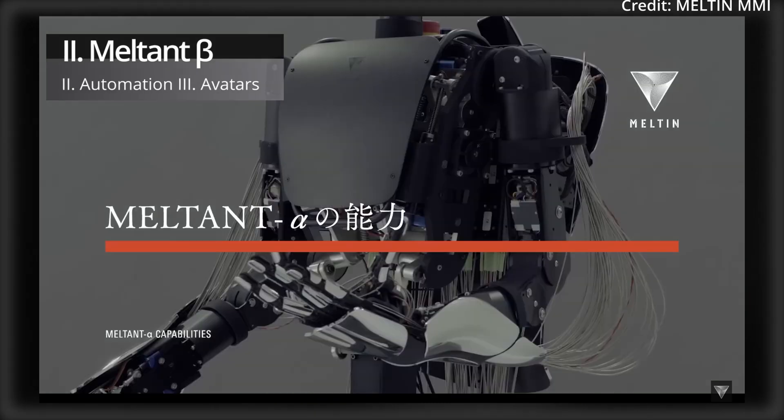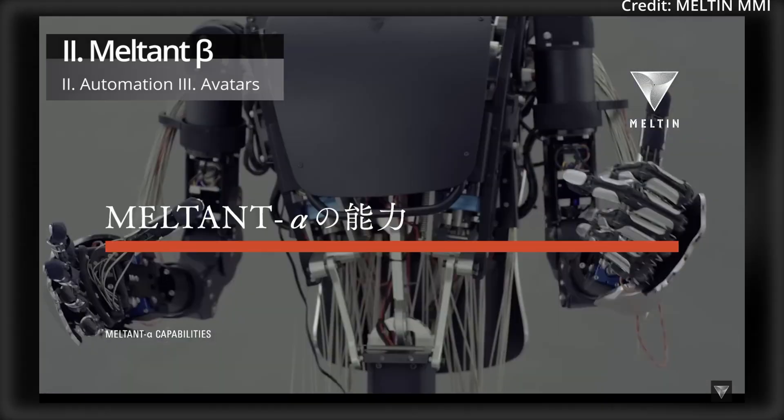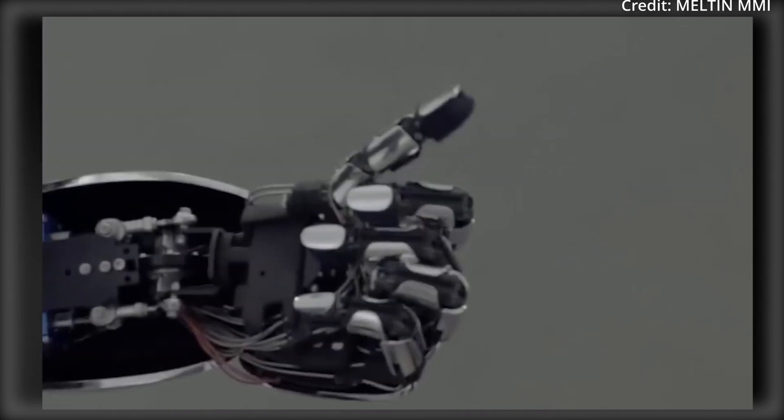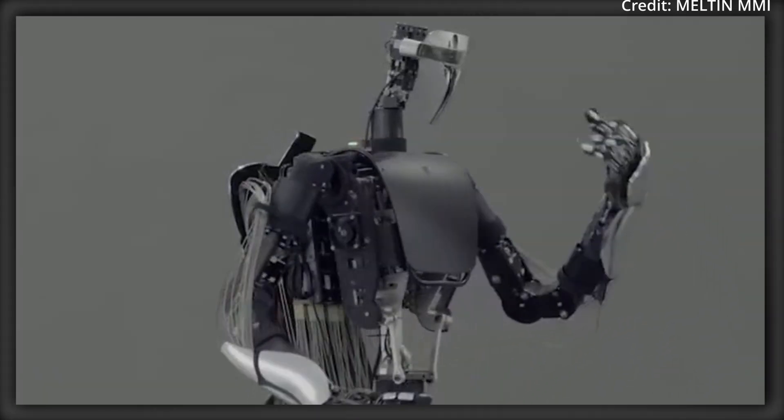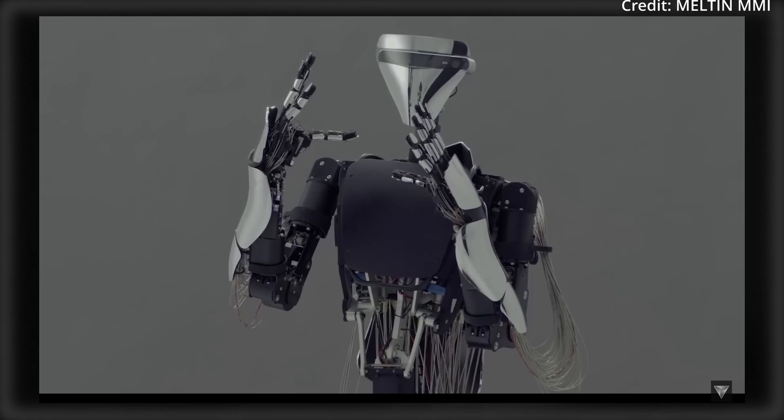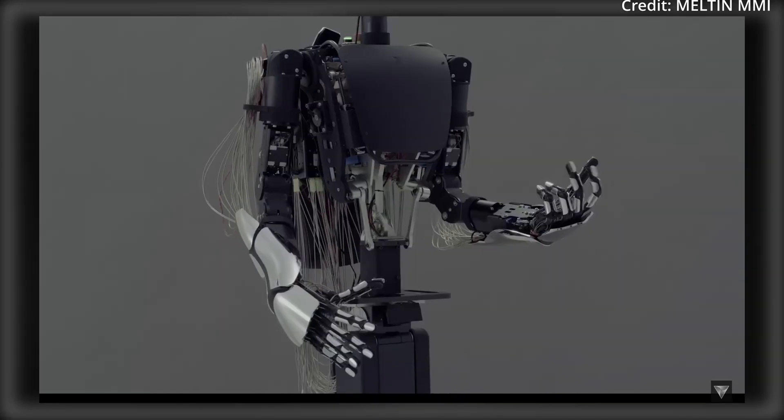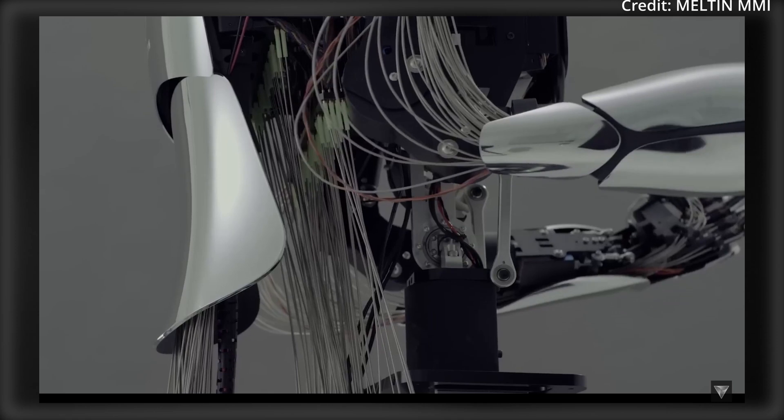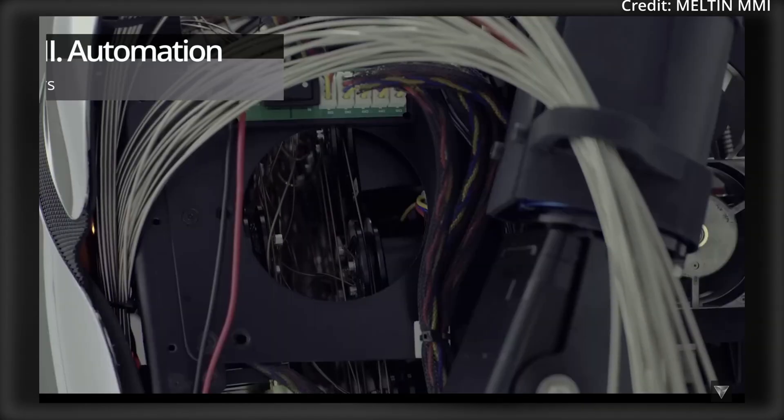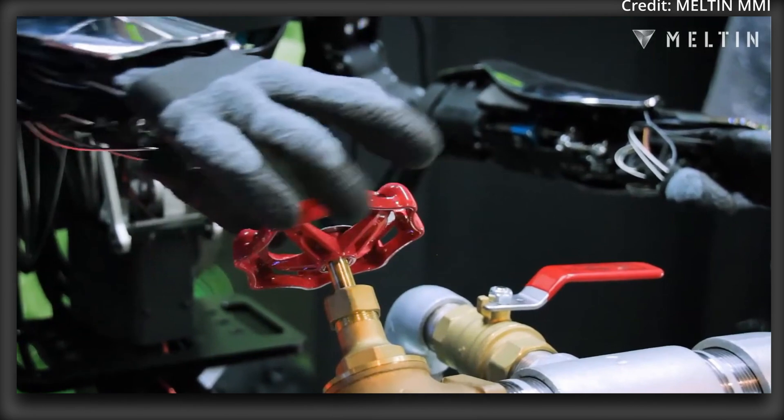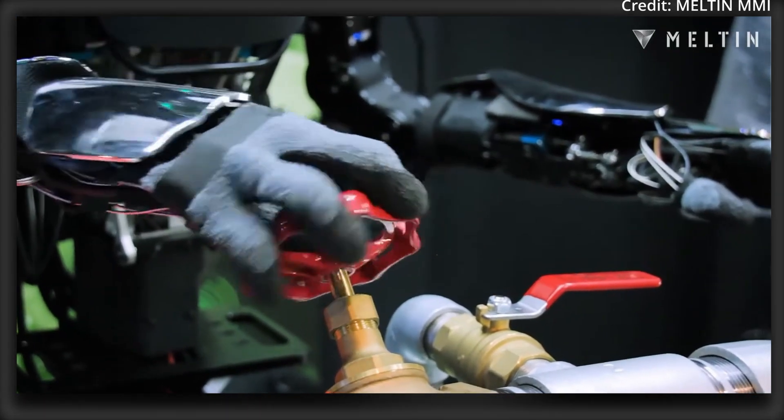Other key improvements to Meltin Beta include increased mobility, enhanced haptics for realistic sensations, and a greater gripping strength. Plus, the model features omnidirectional movement and improved operability through VR interfaces, resulting in a robotic hand that's even capable of performing complex tool-based tasks. And it's already doing human jobs, with the first application of Meltin Beta being to address labor shortages in the construction industry.